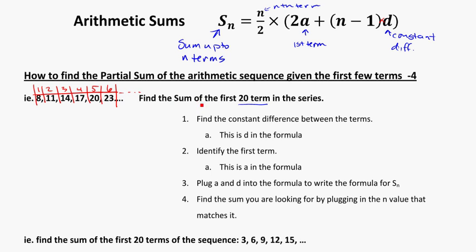And they want to find the sum of the first 20 terms, so if I was going to find the sum of the first six terms, I would just add them up, 8, plus 11, plus 14, plus 17, plus 20, plus 23. But to get to the first 20 terms, I'd have to write out the next 14 terms, and then add them all up, and it can be a bit cumbersome. So, this is where the formula comes in to be helpful for us.